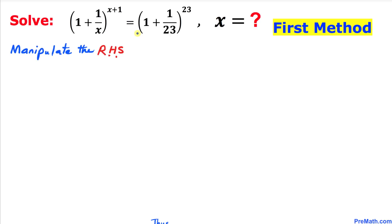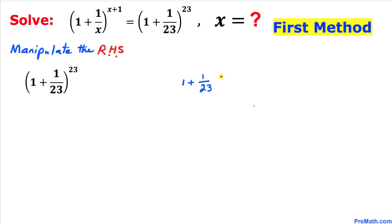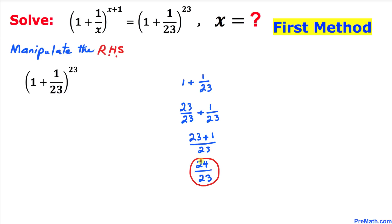In Method 1, we are going to manipulate the right hand side. Let's focus on the part inside the parentheses. Simplifying 1 + 1/23, after a few steps it turns out to be 24/23. So I am going to replace that part by 24/23, giving us (24/23)^23.